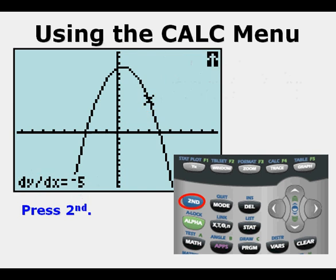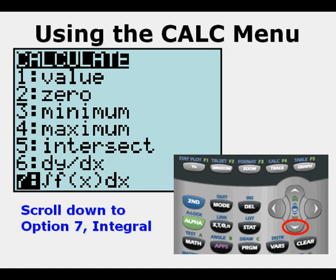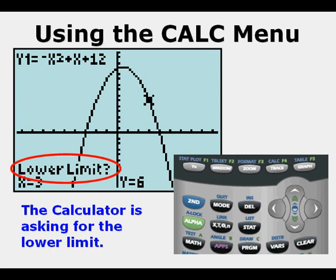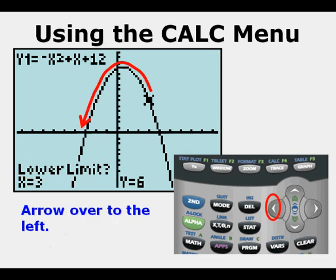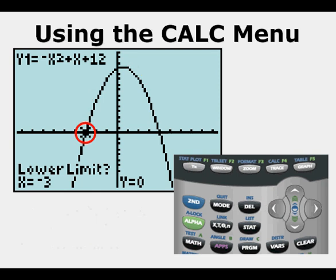Now we'll do one more thing with the calc menu. Press second. Press trace. Scroll down to option seven, integral. Press enter. The calculator is asking for the lower limit. Arrow over to the left. Go all the way to negative three where the x intercept is located. Here the x intercept and lower limit is circled. Press enter.